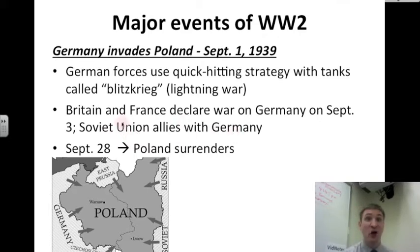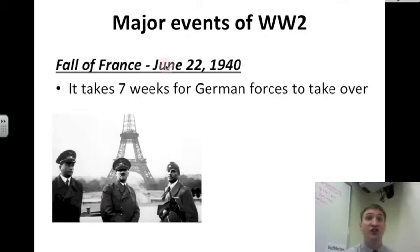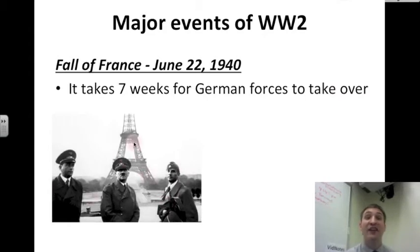It doesn't take long. On September 28th, Poland surrenders to the Nazis and Hitler. Then Hitler and the Nazis go further west, and the entire country of France falls on June 22nd, 1940. It takes seven weeks for the German forces to take over this country. You see Hitler with some of his military leaders, right in front of the Eiffel Tower in Paris.